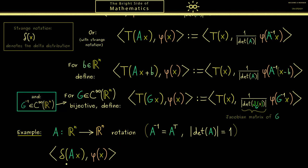Therefore in the next step, let's calculate the new distribution delta after A. Now by the simplified formula, this is delta applied to this test function. Therefore, by the definition of the delta distribution, we know we have to evaluate this test function at 0.